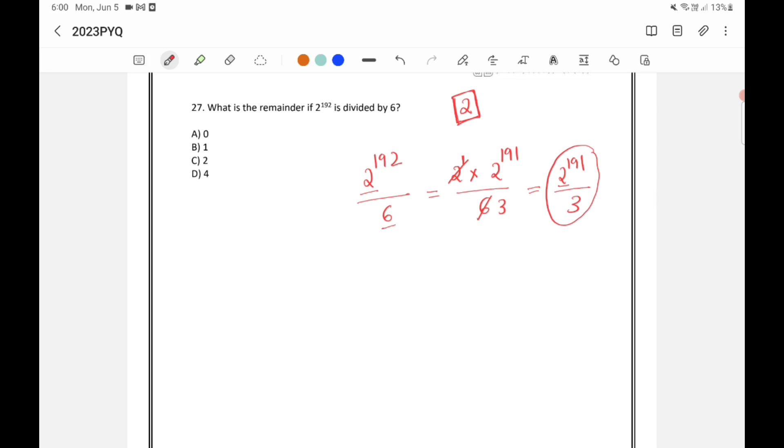So here, as I had already told you that when 2 is divided by 3, the negative remainder is minus 1 because 2 is 1 less than the multiple of 3. So you can write it as minus 1 raised to 191. So minus 1 raised to 191 is minus 1. So we got that when 2 raised to 191 divided by 3, the negative remainder is minus 1.